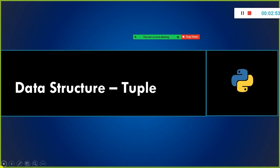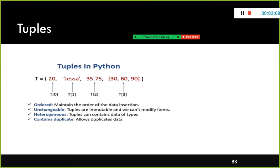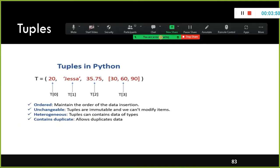Next we will look at the tuple — some people say 'tuple', some say 'tuple'. A tuple is used to store a sequence of immutable Python objects. It is similar to a list but the values cannot be changed. A tuple is an ordered collection of data elements, it is immutable and unchangeable, you cannot modify the items, and you can store multiple data types and even duplicate values in it.